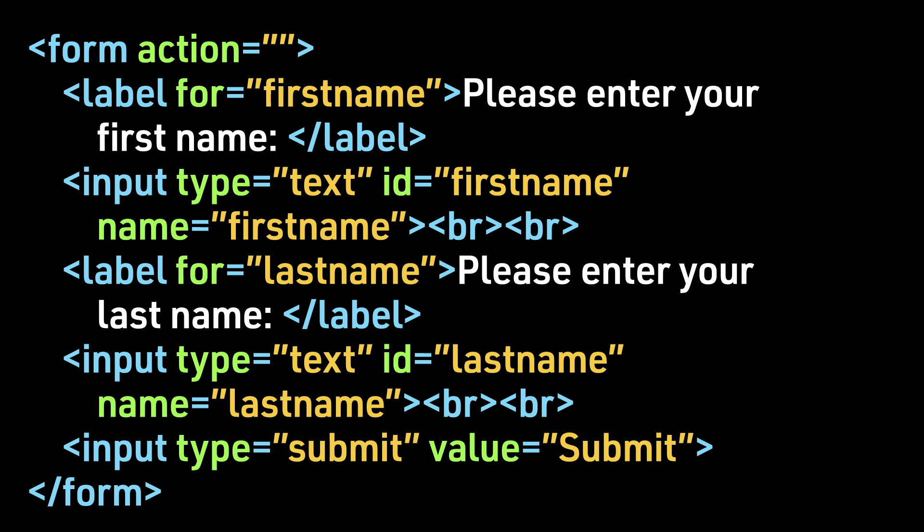The action attribute is left blank because that goes a little bit beyond HTML and CSS — we have to send this information to some sort of collection method or database. In order for that information to be tagged appropriately, you have to make sure each input has a name attribute that is also unique. Our first input for first name has a name attribute of first name, while the second input type has a name attribute of last name.